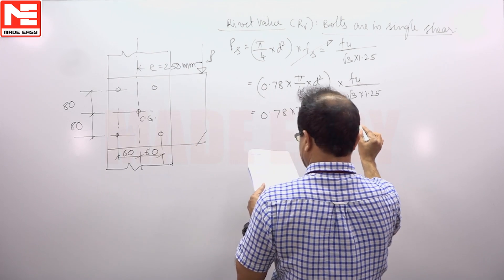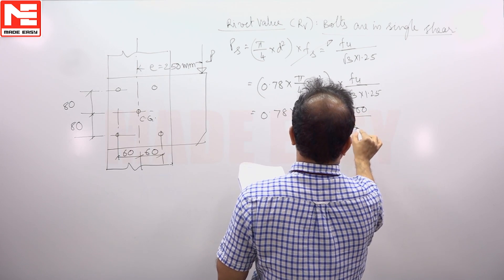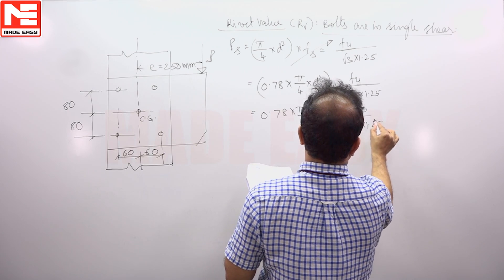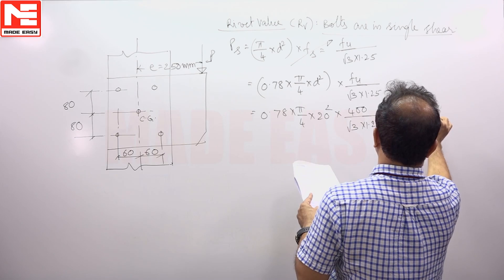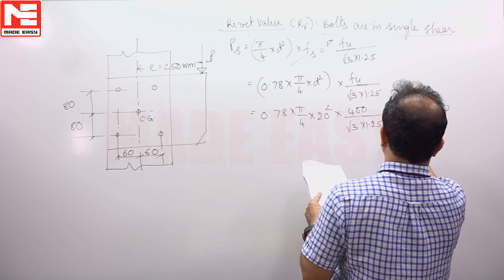Fu you will get as 400/(√3 × 1.25). So you will get 45.27 kN.